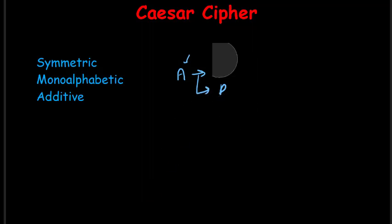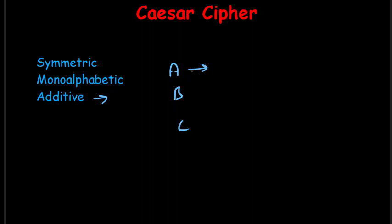Number three: it is an additive cipher. In Caesar cipher, whatever plaintext alphabet we have, like A, if we write the alphabet sequence A, B, C, this A is displaced by three positions.